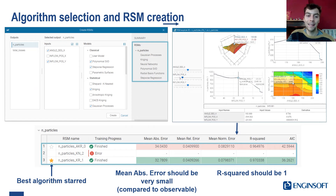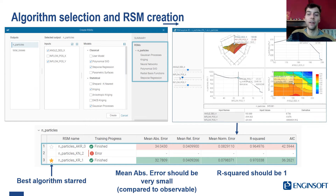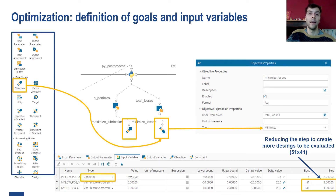In order to pick the best algorithm, as you can see here with the start design, we need to reduce the mean absolute error. Of course, this error should be contextualized with the absolute values of the observable. For instance, the number of particles is on the order of a thousand, so a mean error of 30 is approximately 0.3%. Another parameter we can use to select a specific algorithm is the R-squared parameter. Once we select and prepare the response surface, we can create an optimization workflow in ModFrontier.